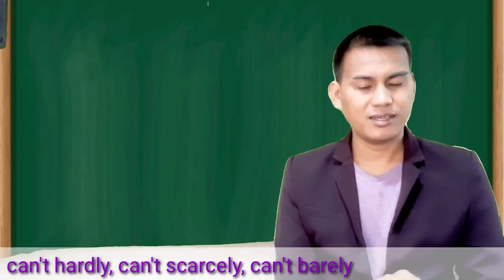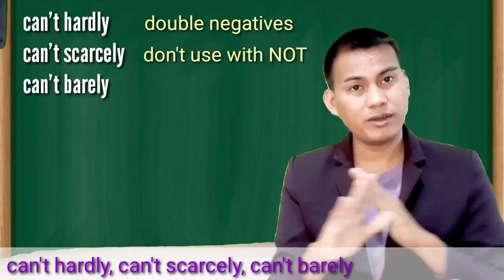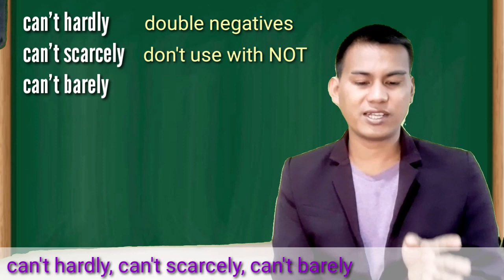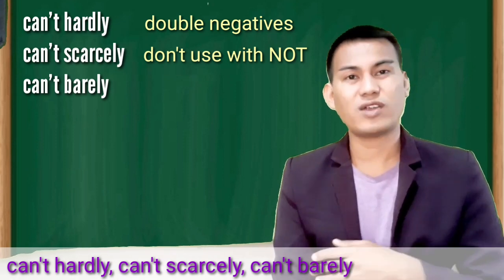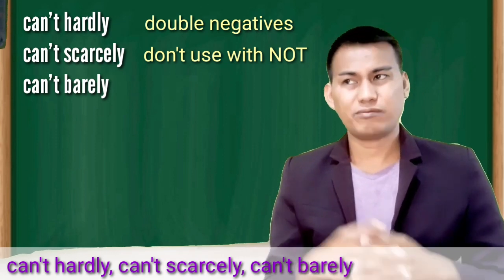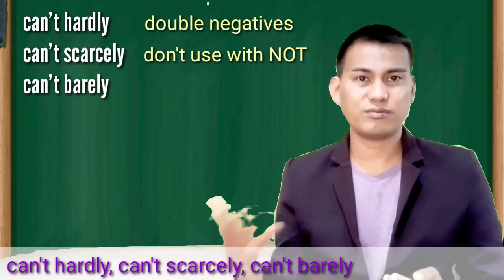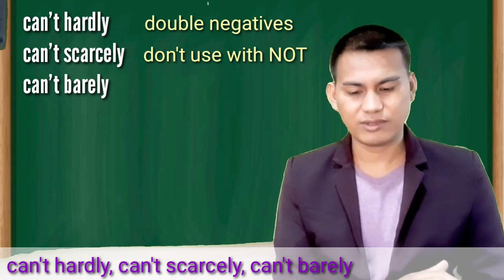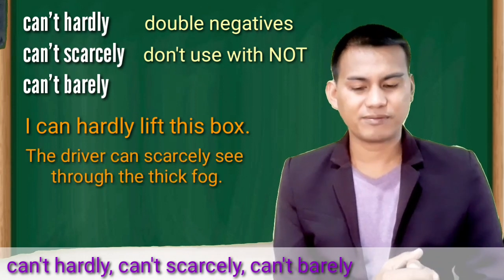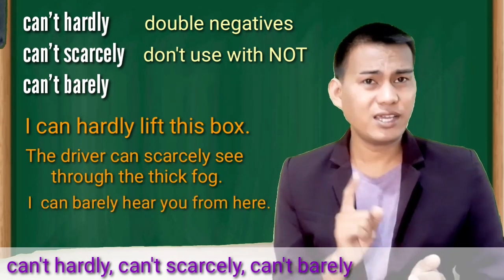Can't hardly, can't scarcely, can't barely. These phrases are considered double negatives. Don't use hardly or scarcely or barely with not or the contraction N-T, okay? Because hardly, scarcely, barely are already negatives. So then you add the word can't or not, so that's a double negative now. So just use hardly or scarcely or barely. I can hardly lift this box. The driver can scarcely see through the thick fog. I can barely hear you from here.